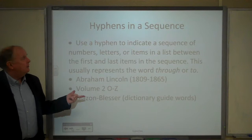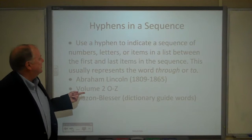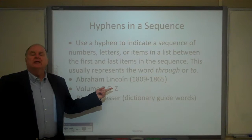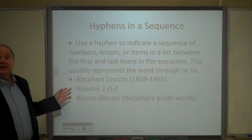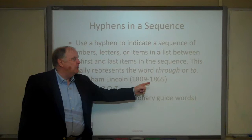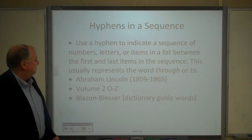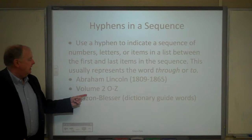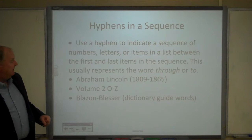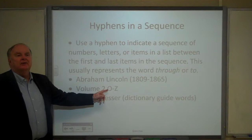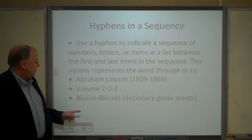Hyphens are also used to indicate a sequence of numbers, letters, or items in a list between the first and last items in the sequence. Usually the hyphen represents the word through or to. So we see this with people's milestone dates — Abraham Lincoln, 1809 to 1865 — or on the title of a book, like Volume Two, O through Z, which tells us it covers all words beginning with letters O through Z.